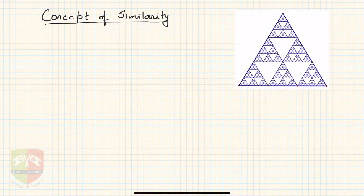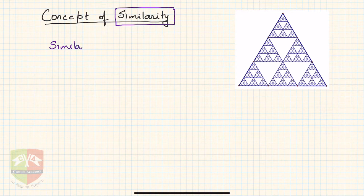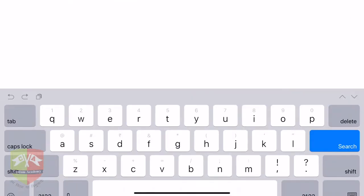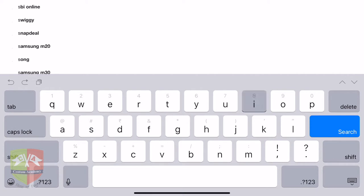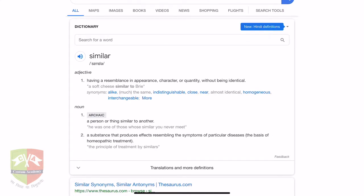The best way to start off any new topic is to deconstruct the topic and the names which are given. Here there is a term similarity, which originates from the word similar. Let us first do a random Google search on what the word similar and similarity mean. I'm going to type in the keyword similar and let's see what we get as search results.